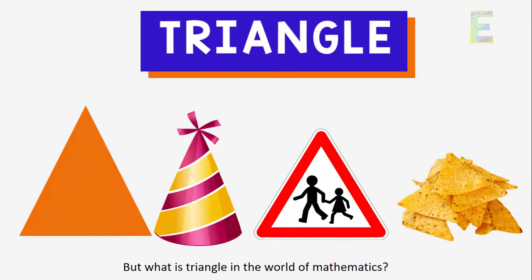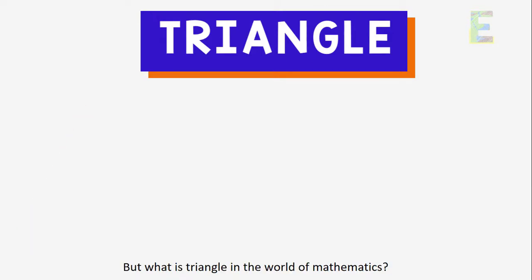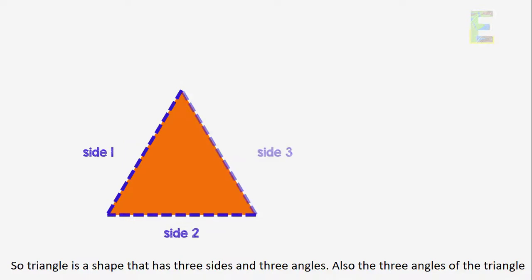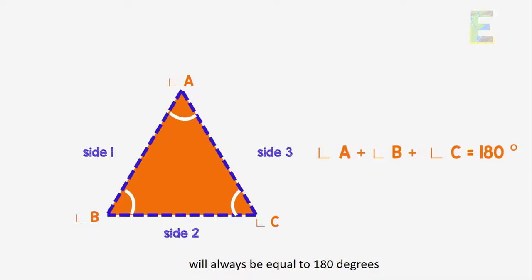But what is triangle in the world of mathematics? So triangle is a shape that has three sides and three angles. Also, the three angles of the triangle will always be equal to 180 degrees.